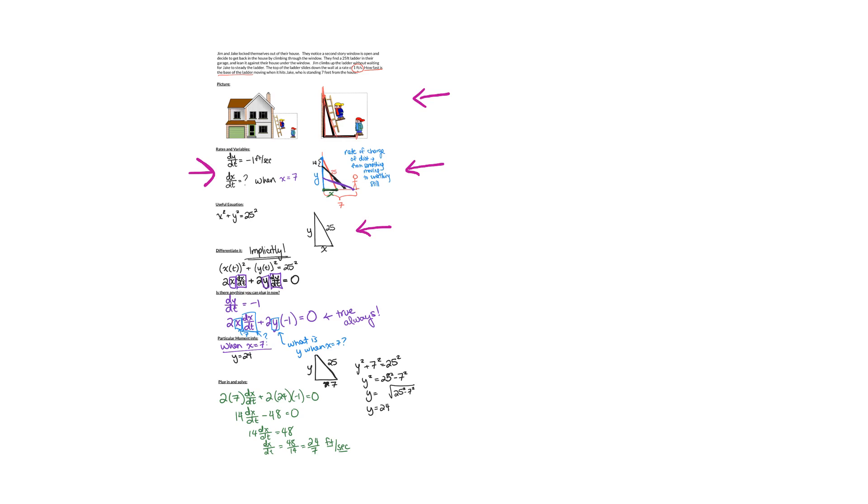After we had an equation that had just those variables—the ones for the derivatives that we knew and the one we were trying to find and no other variables—then we took the derivative with respect to time. We had to differentiate implicitly because all of our variables were changing with respect to time. At that point, we could plug in any values, such as other rates that we were given, that are true throughout the entire story.